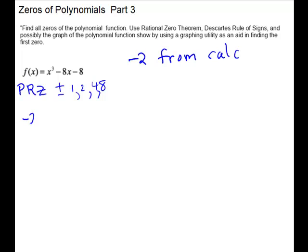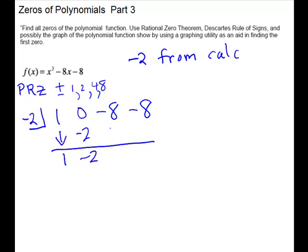So we'll do synthetic division with the negative 2. You have to be a little careful when you set this one up because you're missing a term. So you have 1 for x cubed. You don't have an x squared, so make sure you put a 0 in. Skip a row. So 1 times negative 2 is negative 2. This is still negative 2. This is positive 4. Negative 4 and positive 8. And there is our 0 remainder.